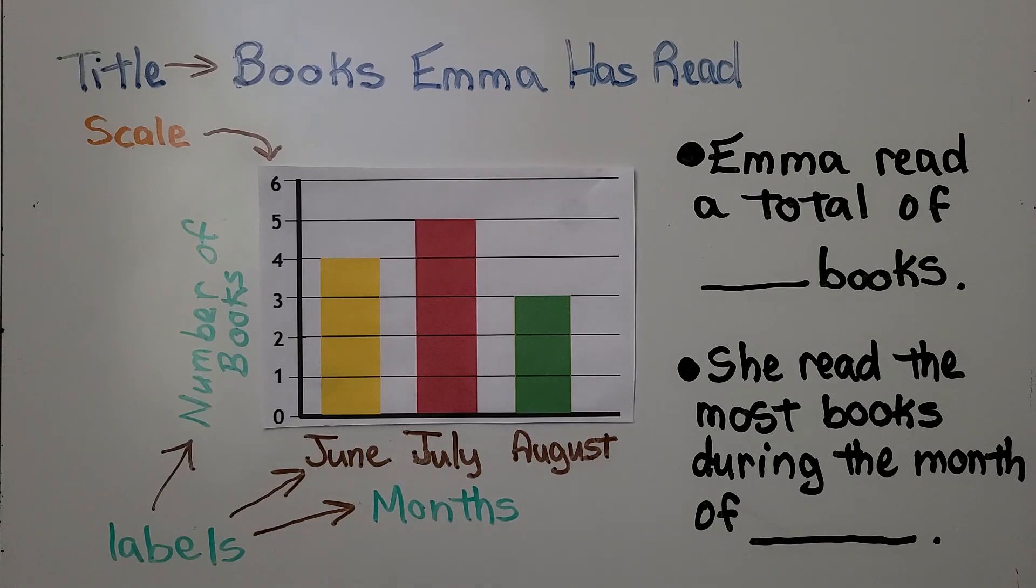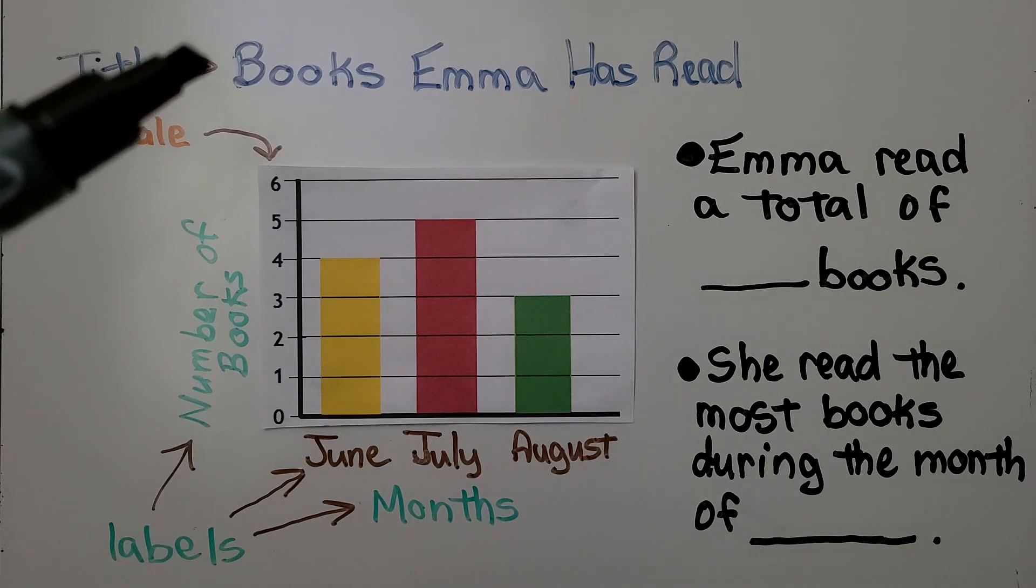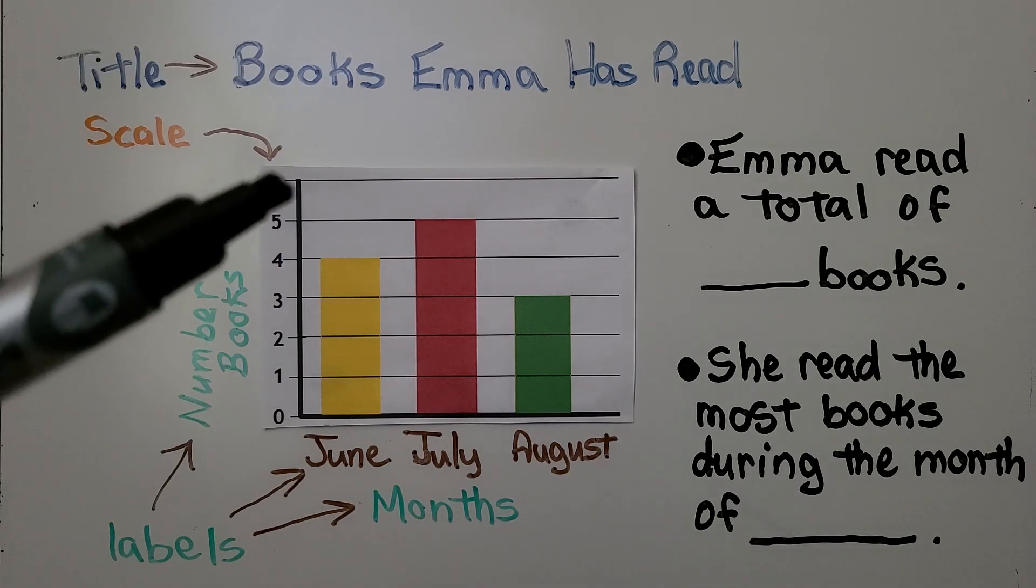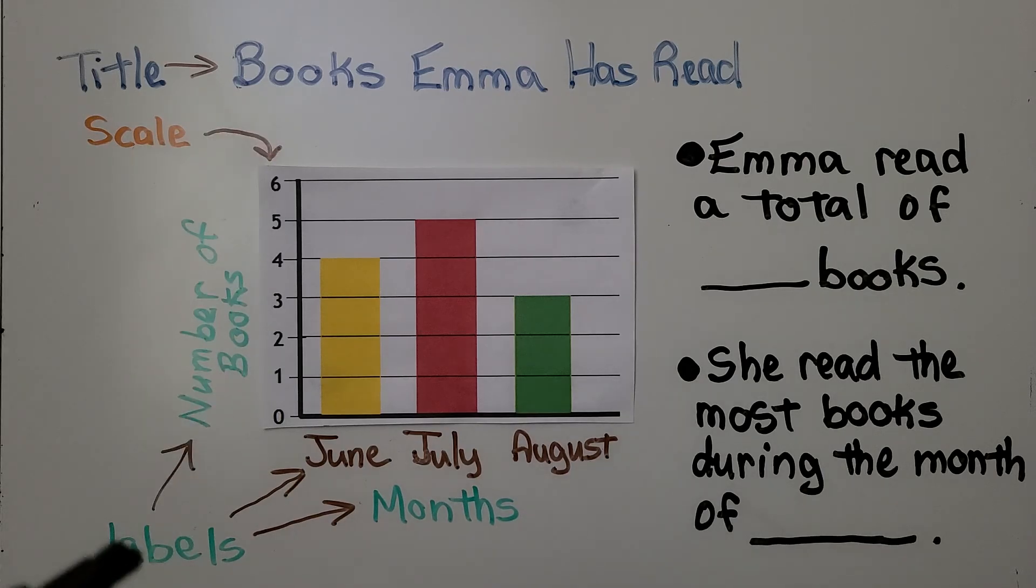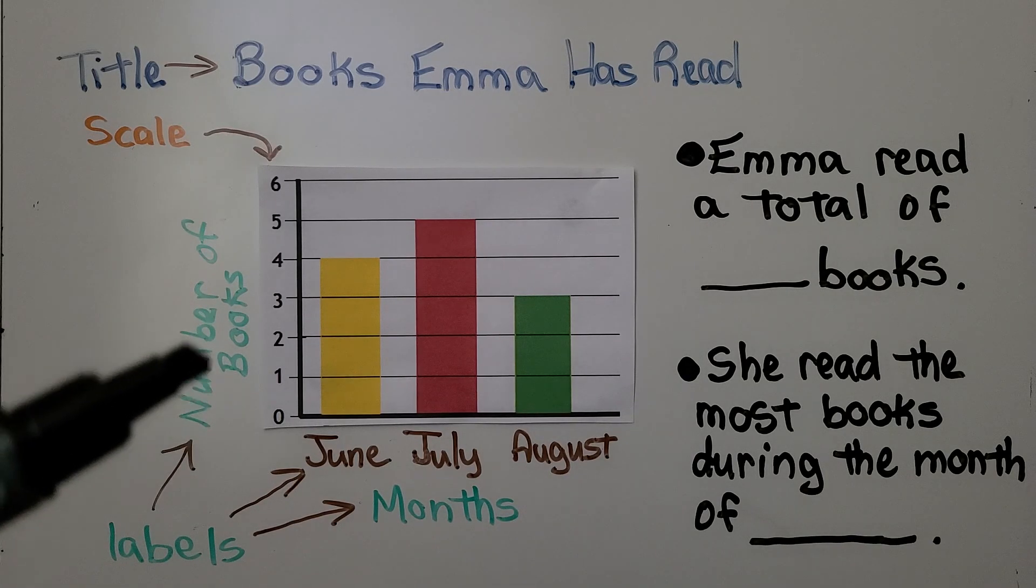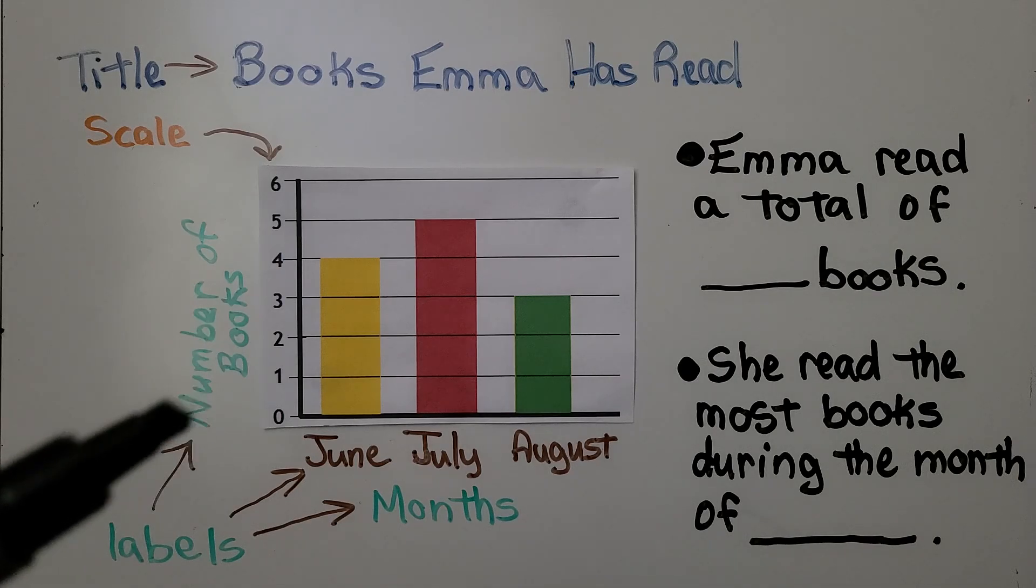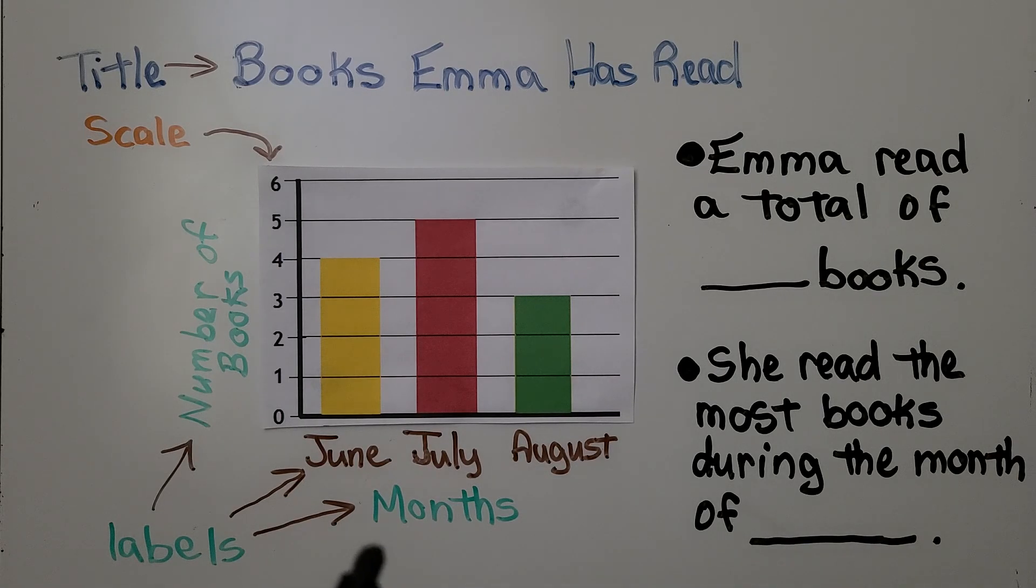We can see on this bar graph it's titled Books Emma Has Read. Here we have our scale of numbers and we have our labels. The numbers are the number of books and we have a label for the months June, July, and August.